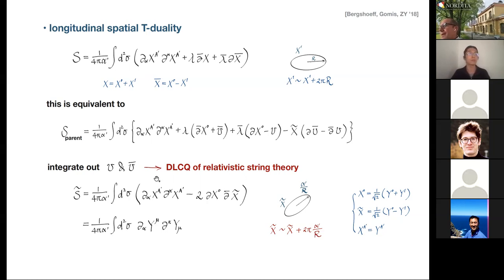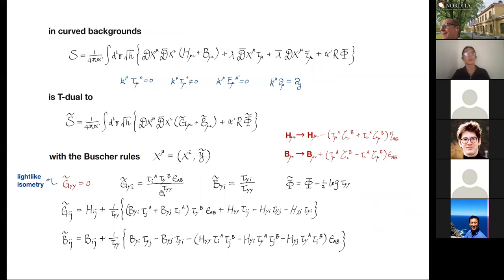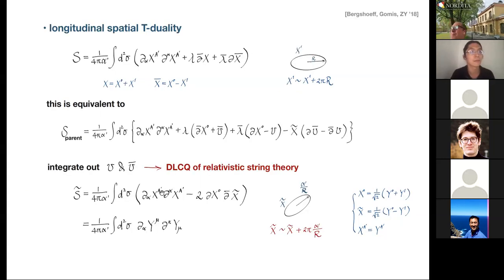Therefore on the T-dual side we have a compactification over a light-like direction — this is the discrete light-cone quantization of relativistic string theory. It's light-cone because we have this light-like direction, and discrete because we have a compactified circle giving discretized momentum.